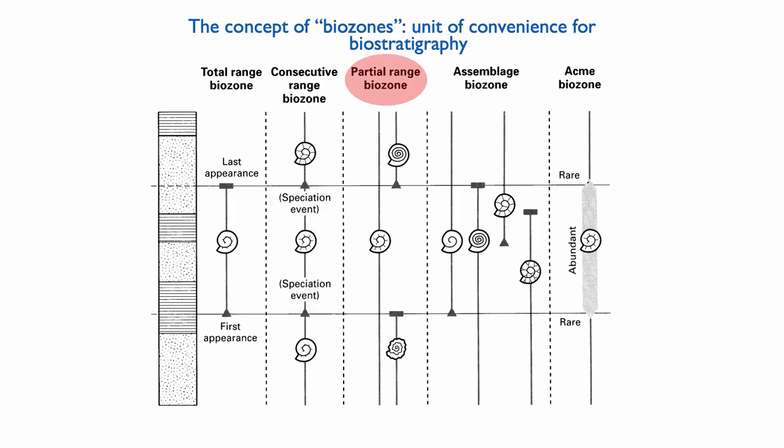You can also have a partial range biozone. Now, a partial range biozone is when you have one index species that basically straddles several biozones, but it is sometimes found with one key species that disappears at some point, then it's found on its own, and then it's found again with another different key species. And that's the partial biozone. It's when this particular species is present on its own and with the absence of the two other key species. And that can be a very good time marker.